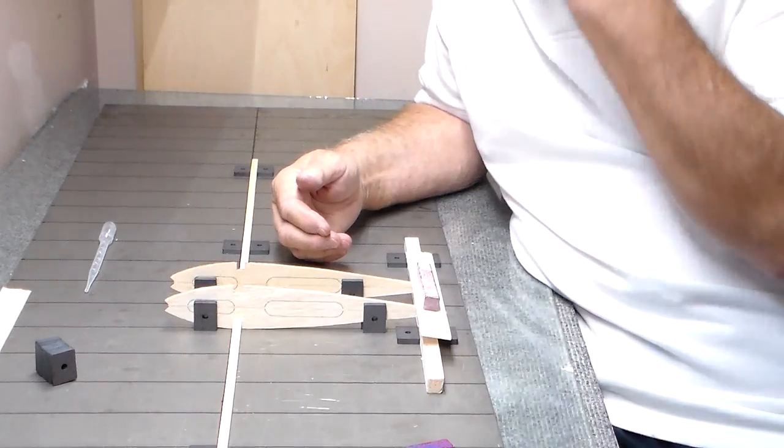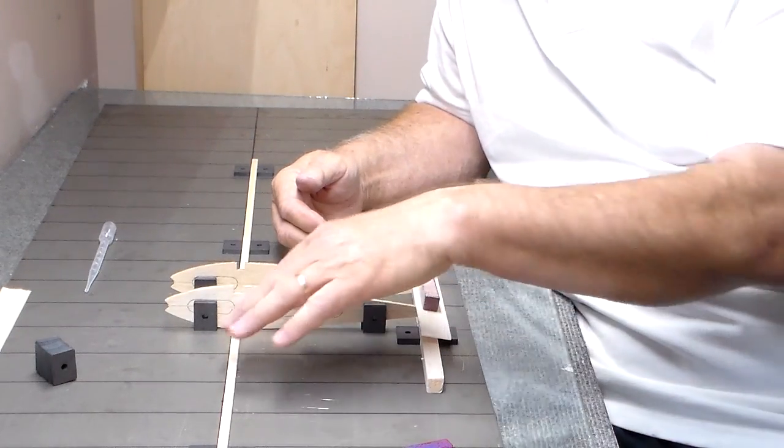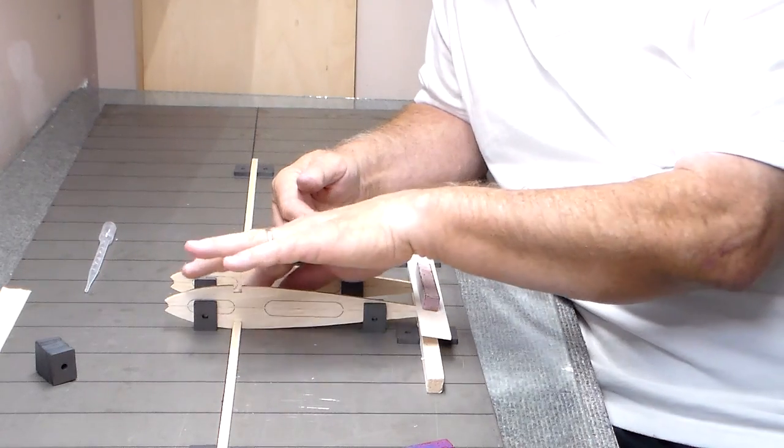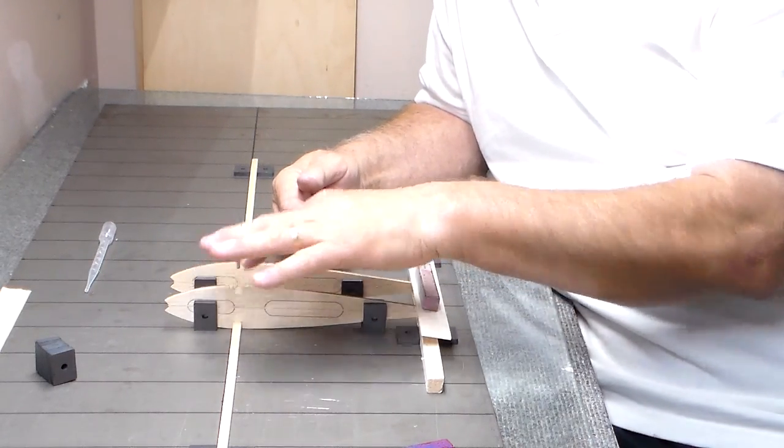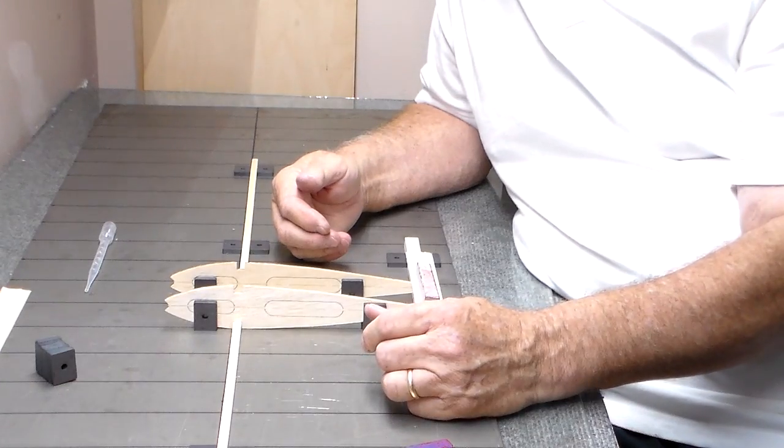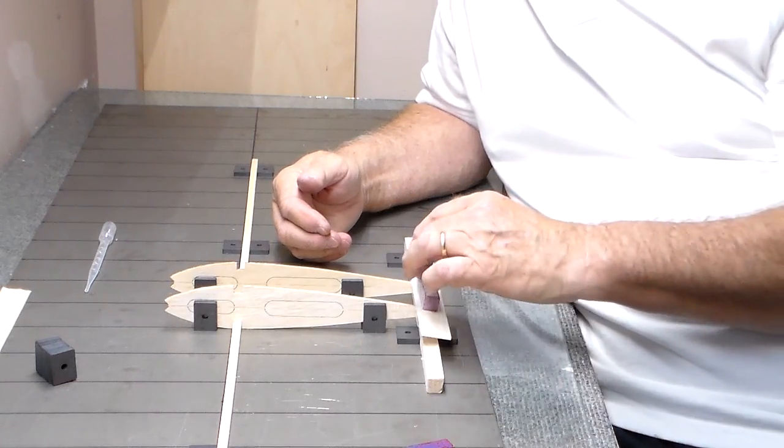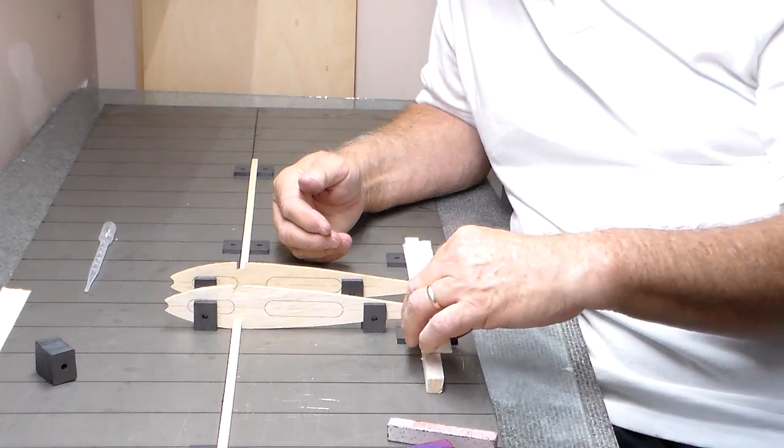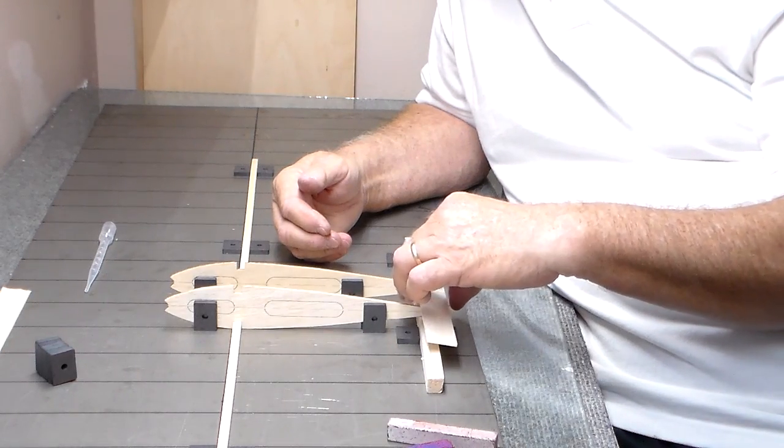Now the logical progression for me is the first thing I do is I drop the ribs on the spar and I attach, or glue, the ribs to the spar and have them all on there. I then come back here to the trailing edge and do one side of the trailing edge this way and that way.